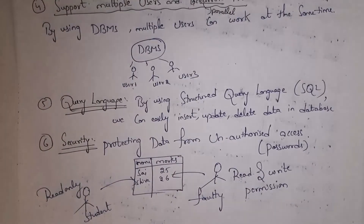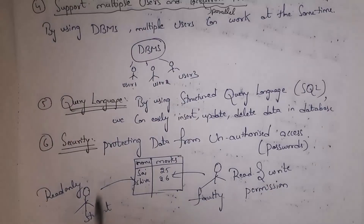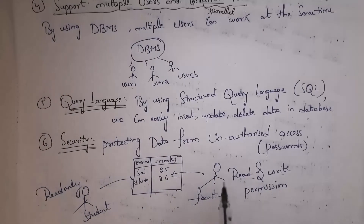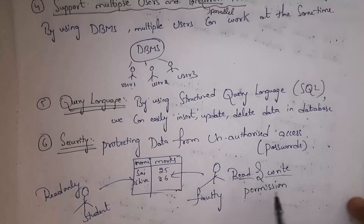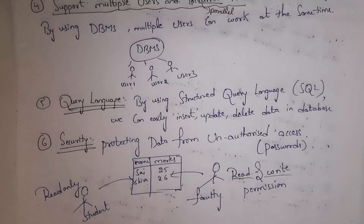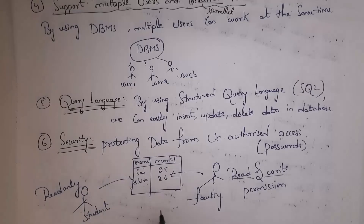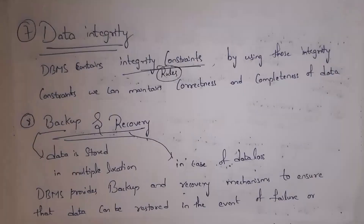The next feature is security. We can keep a password on our DBMS software and also give various access permissions. For example, for a faculty member we can give both read and write permission — the faculty can read and write data. For a student we can give only read permission, not write permission, to prevent students from modifying data. In this way we can give various types of permissions to various users.